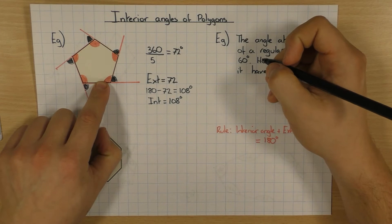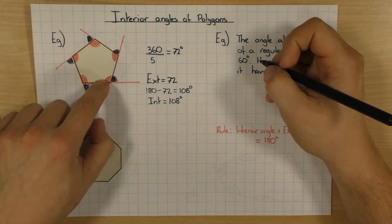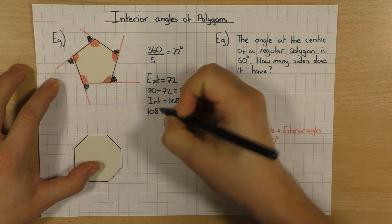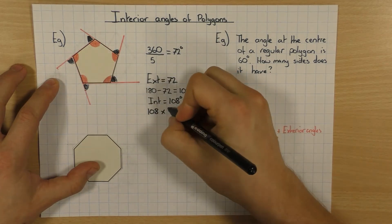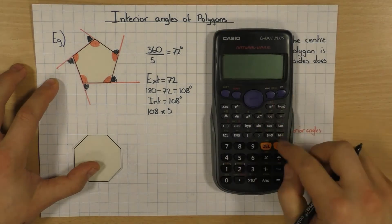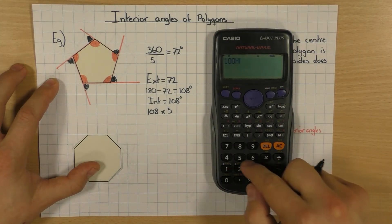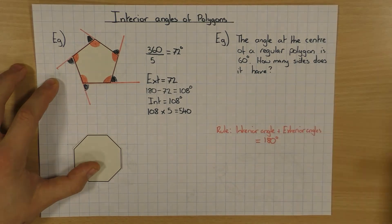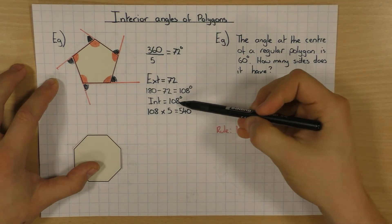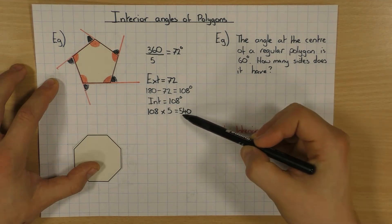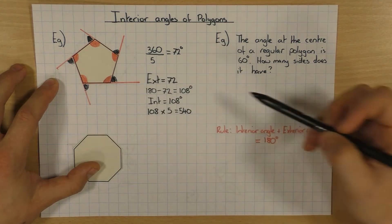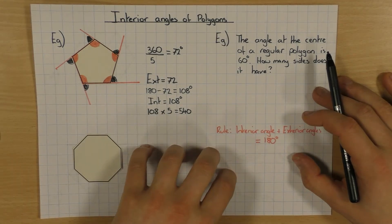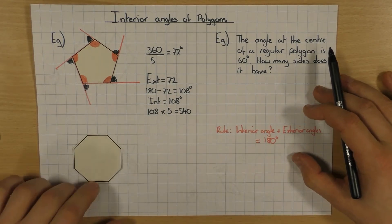So that's what one interior angle is worth. If you want to know the sum — the total of all of them — you just do 108 times 5, which is 540. So the individual interior angle is 108, the sum of all the interior angles is 540, and the exterior angle is 72. That's one way: work out the exterior, that tells you the interior, and then using that you can work out the total.